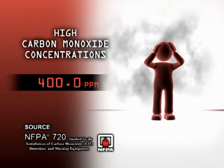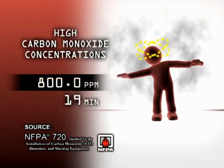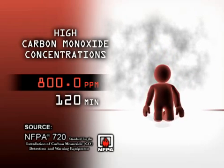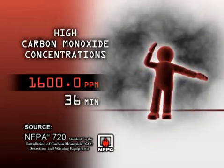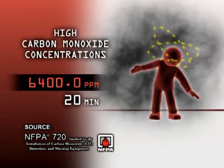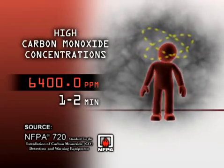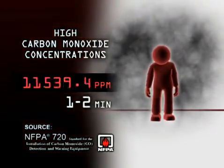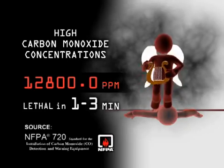400 ppm concentrations cause headaches and nausea. 800 ppm causes dizziness after 45 minutes of exposure, collapse, and unconsciousness after 1 to 2 hours. At 1,600 ppm, dizziness occurs within 20 minutes. At 6,400 ppm, dizziness occurs in 1 to 2 minutes, with unconsciousness and danger of death after 10 to 15 minutes. Carbon monoxide levels of 12,800 ppm can cause death in as little as 1 to 3 minutes.